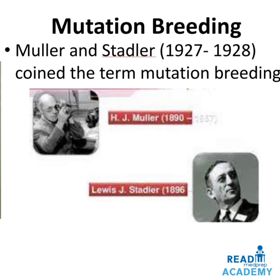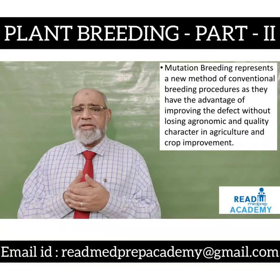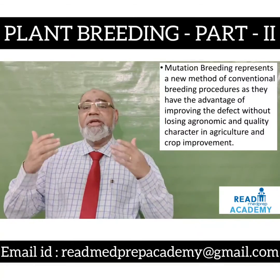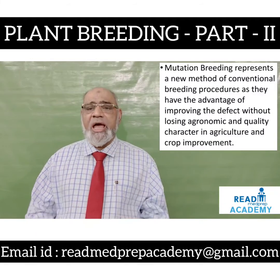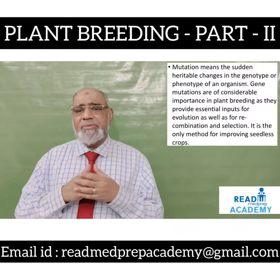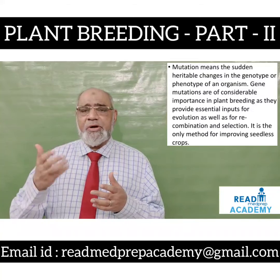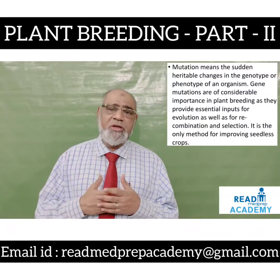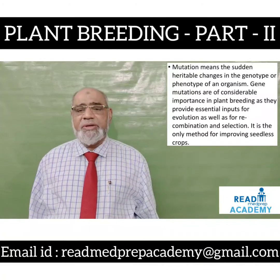What is mutation breeding? Muller and Stadler in 1927–1928 coined the term mutation breeding. Mutation breeding represents a new method of conventional breeding procedures, with the advantage of improving defects without losing agronomic and quality characters in agriculture and crop improvement. Mutation means the sudden heritable changes in the genotype or phenotype of an organism. Gene mutations are of considerable importance in plant breeding as they provide essential inputs for evolution, recombination and selection. It is the only method for improving seedless crops.